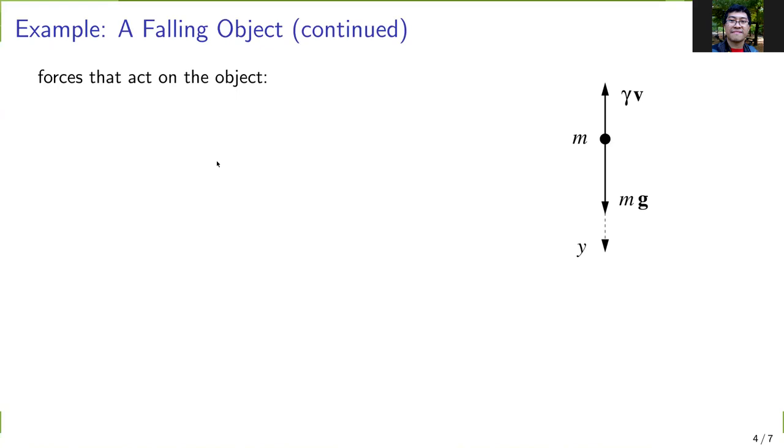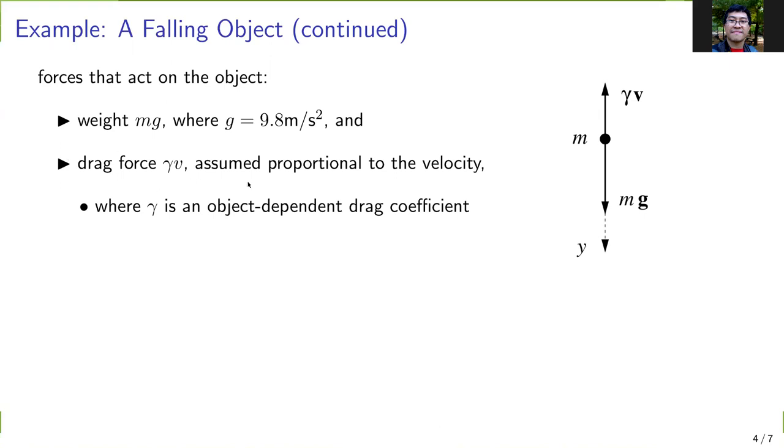Now let's consider the forces acting on the object. We know there is weight equal to mg, where g is the acceleration due to gravity, 9.8 meters per second squared. We may also have drag force, the resistance due to air. We assume it's proportional to the velocity, where γ is an object-dependent drag coefficient and v is the velocity.